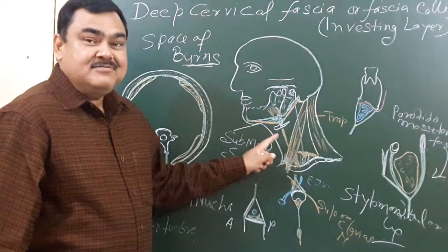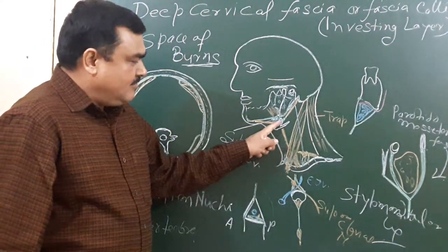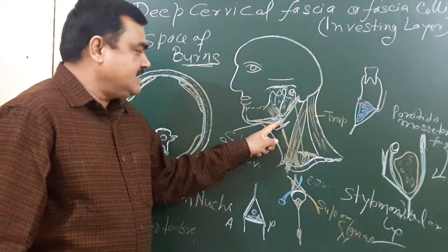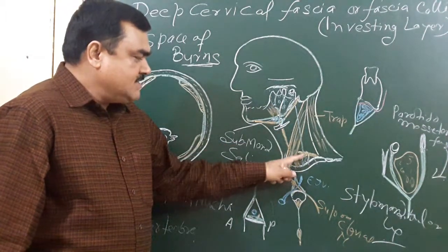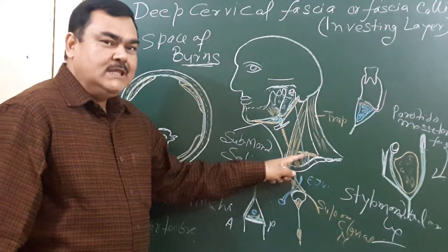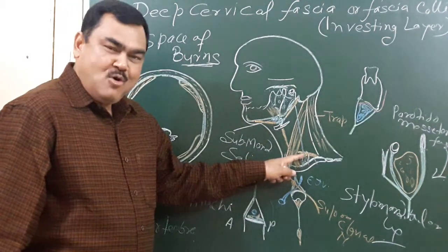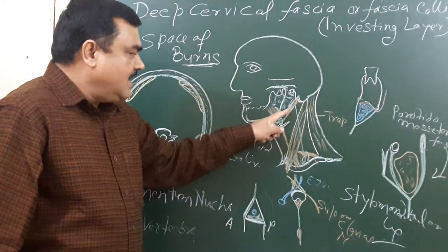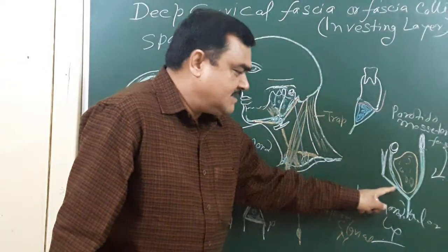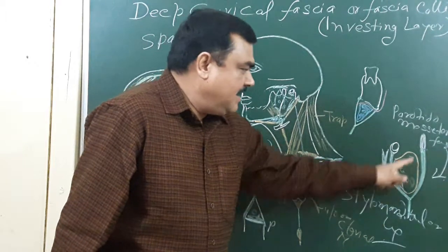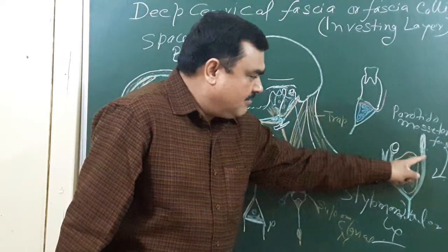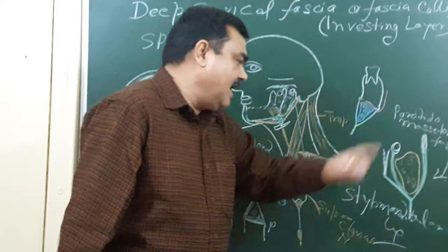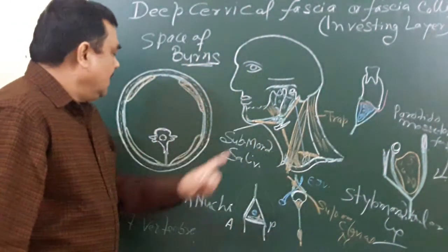It also forms slings at two sites. One sling holds the intermediate tendon of the digastric, and one sling holds the inferior belly of the omohyoid. It also thickens and forms a ligament — the stylomandibular ligament — and here it forms the thickened fascia, that is the parotid masseteric fascia.